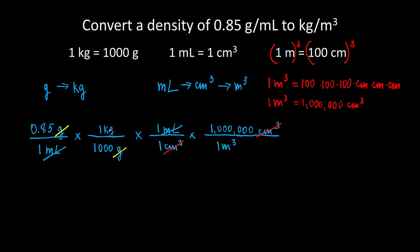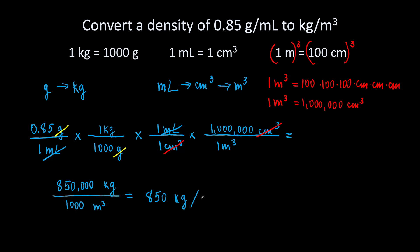Now we can do the math because we finally got kilograms per cubic meter. We are going to multiply all the numbers on top of the fractions: 0.85 times 1 times 1 times 1 million. Get a calculator and multiply — we will have 850,000 kilograms. Now multiply all the numbers on the bottom: 1 times 1 times 1 times 1 gives 1,000. Dividing 850,000 by 1,000 gives 850 kilograms per cubic meter.